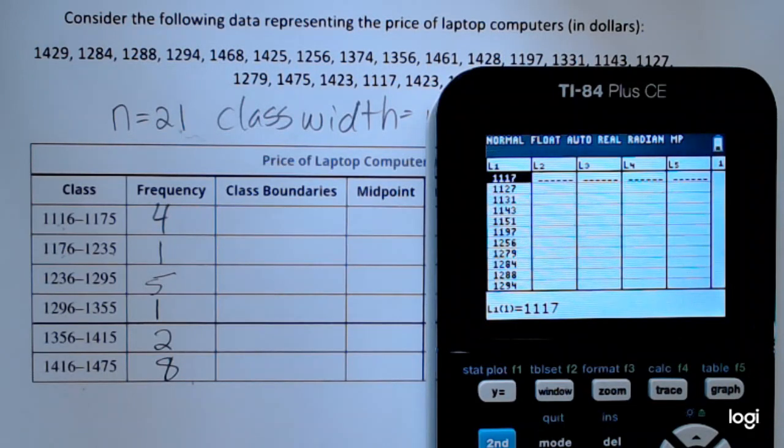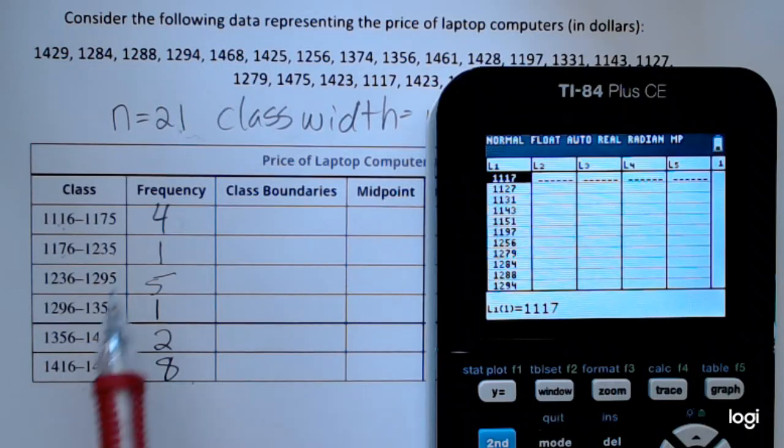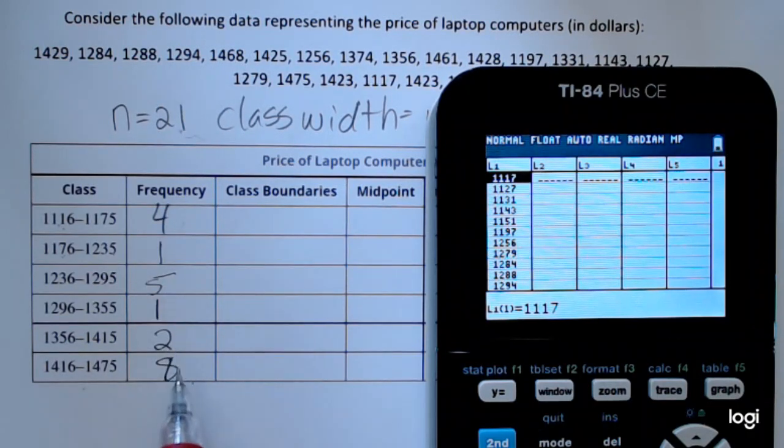To double check to see if I got them all, if I summed all of these frequencies, I should get my sample size of 21.